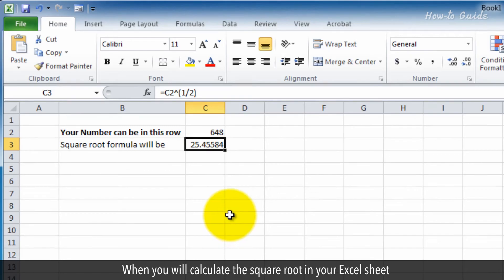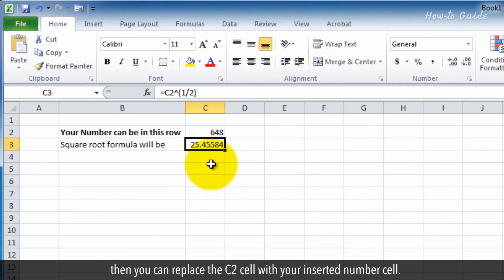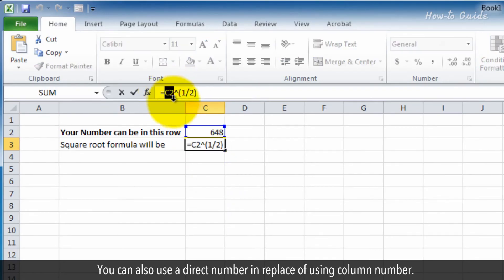When you calculate the square root in your Excel sheet, you can replace the C2 cell with your inserted number cell. You can also use a direct number instead of using a column number.